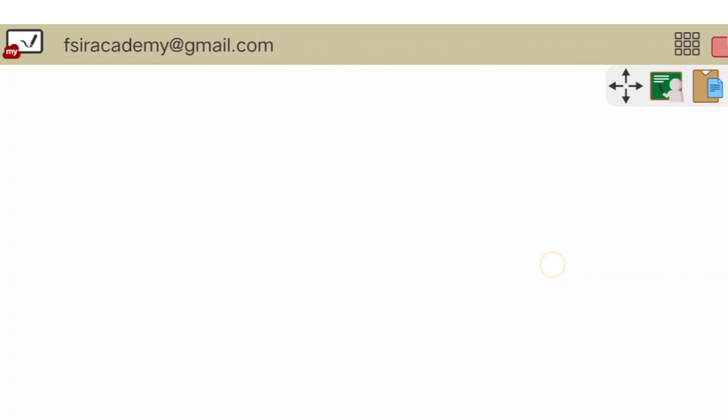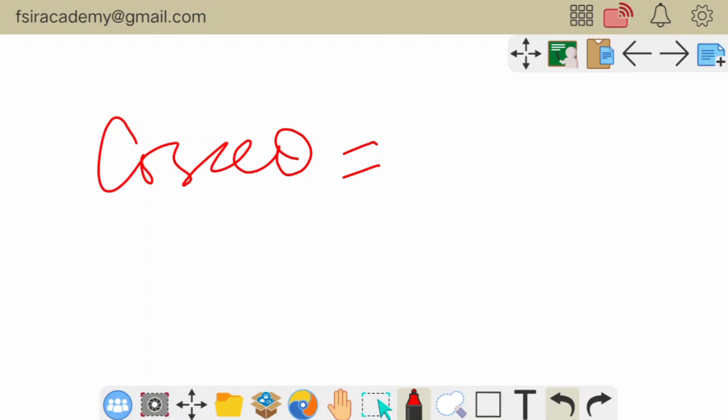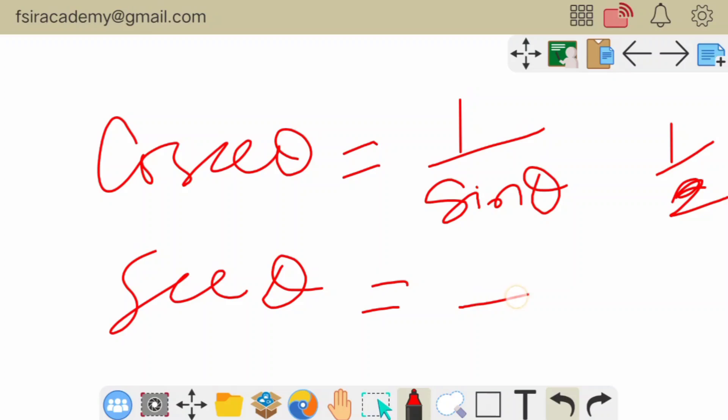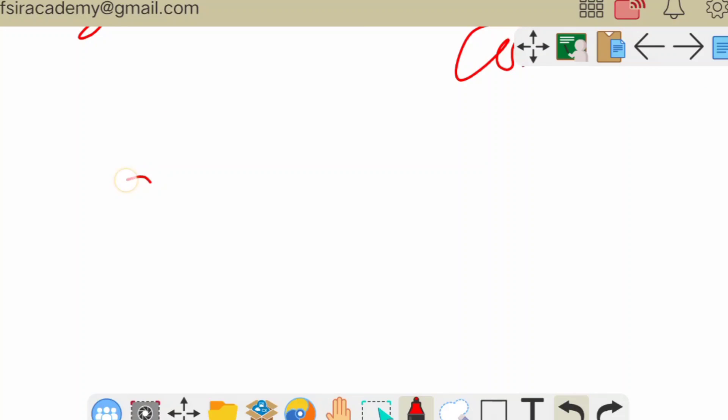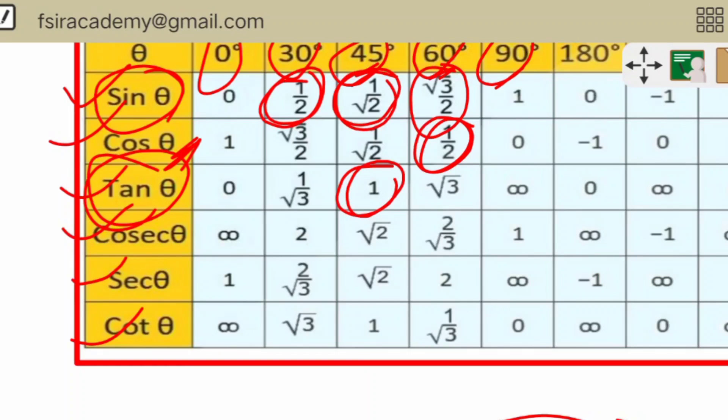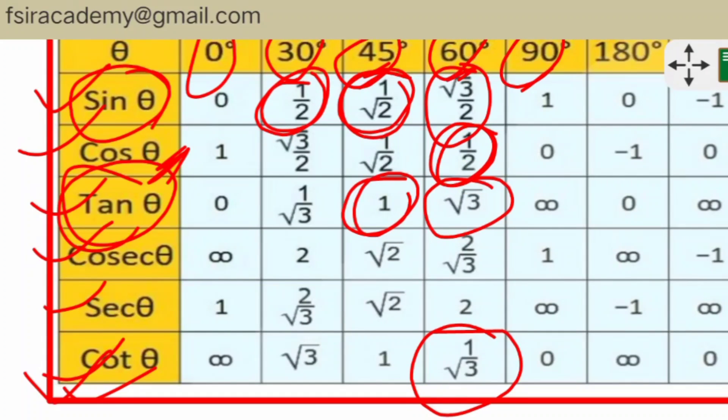Remaining three ratios, that is cosecant, secant, cotangent. Cosecant equal to one by sine theta. If sine 30 degree equal to one by two, so cosecant will be two by one. Secant is related with cosine, secant equal to one by cosine. If cosine 45 degree equal to one by root two, so secant 45 degree equal to root two by one, that is root two. Similarly we can find out the value of cotangent any angle. We know cotangent theta equal to one by tangent theta. If tangent 60 degree equal to root three, cotangent 60 will be one by root three.